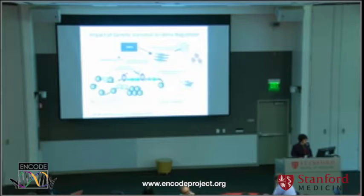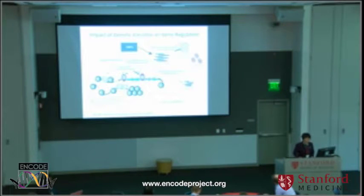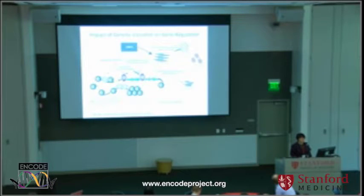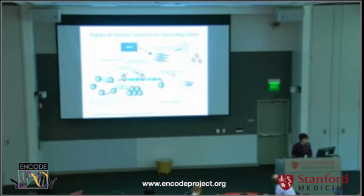Obviously SNPs can impact epigenetic modifications or transcriptional initiation, and we have heard a lot of exciting talks in the past two days about these aspects. In addition to epigenetic and transcriptional regulation, there is increasing appreciation about post-transcriptional regulation and how genetic variations may influence pre-mRNA processing including alternative splicing, post-transcriptional processing, mRNA stability, RNA export, or translation.